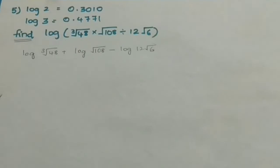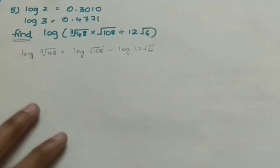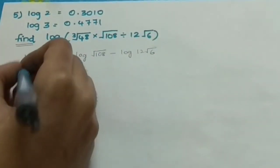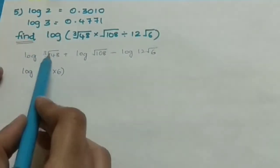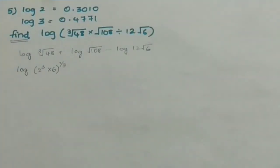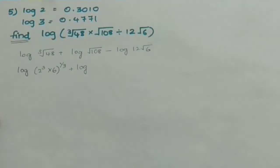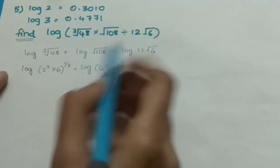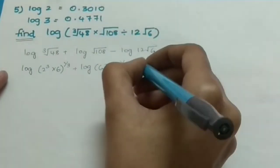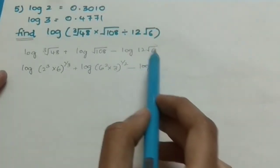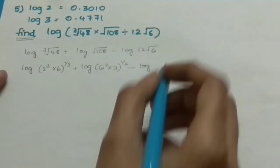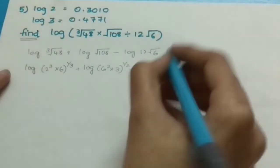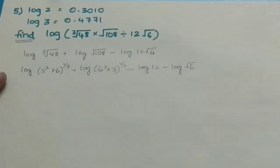I am going to write 48 in its prime factorization: 2^3 × 6. So log(2^3 × 6) to the power 1/3. And 108 = 6^2 × 3, with square root meaning power 1/2: log(6^2 × 3) to the power 1/2. The last term: log(12 × root 6) = log 12 minus log(root 6), written separately.